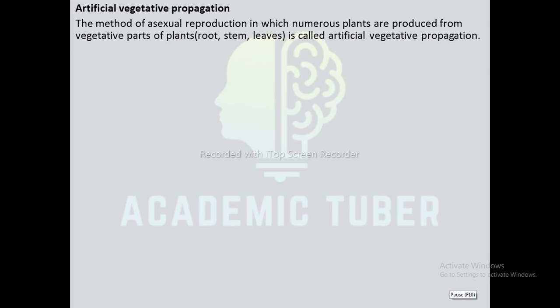Artificial Vegetative Propagation. The method of asexual reproduction in which numerous plants are produced from vegetative parts of plants — i.e. from root, stem, and leaves — is called Artificial Vegetative Propagation. It is a commercial technique of reproducing plants rapidly by using their vegetative parts, usually used to reproduce plants that produce either very few seeds or do not produce viable seeds.